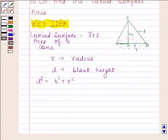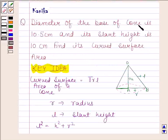Let's now begin with the solution. In the question, we are given that diameter of the base of the cone is 10.5 cm. This means this whole portion is equal to 10.5 cm.